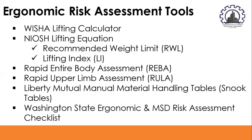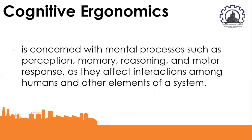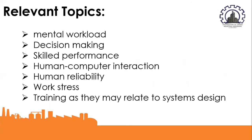We will now discuss the other domain of ergonomics — cognitive ergonomics. Cognitive ergonomics is concerned with mental processes such as perception, memory, reasoning, and motor response as they affect the interactions among humans and other elements of a system. The relevant topics under cognitive ergonomics include mental workload, decision-making, skilled performance, human-computer interaction, human reliability, work stress, and training as they may relate to systems design.